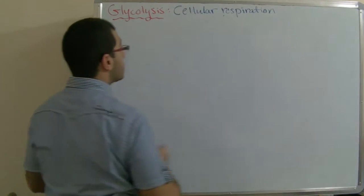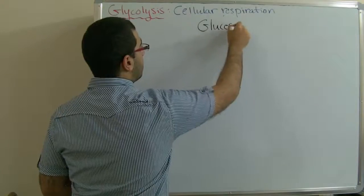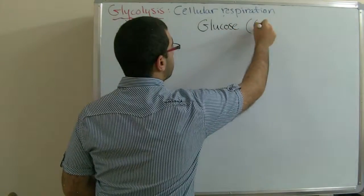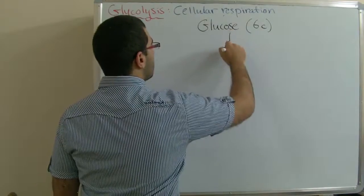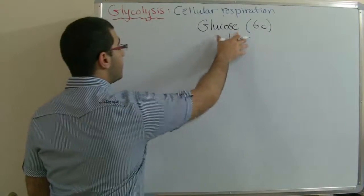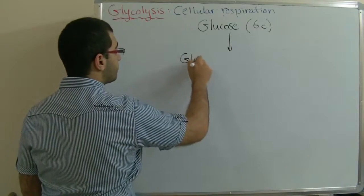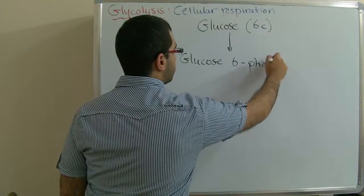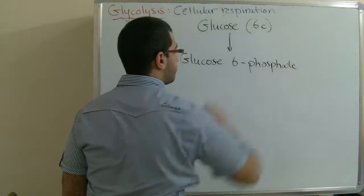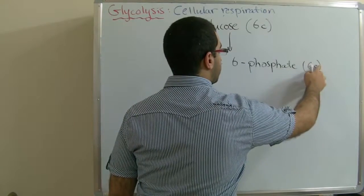So, glycolysis begins with a glucose molecule which has 6 carbon atoms. Glucose then changes into glucose 6-phosphate, which also has 6 carbon atoms.